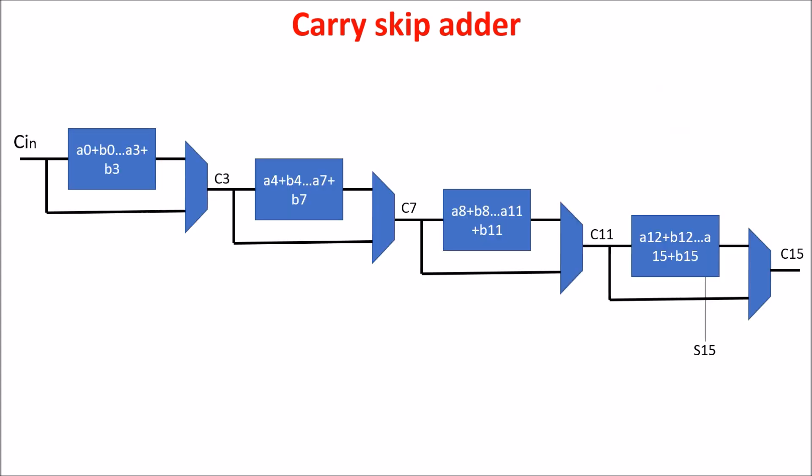If we put four blocks together, we have a 16 bits adder because in every block we have four full adders. This configuration has the pro that if all the propagation bits of a block are high, the carry-in skips the whole block.